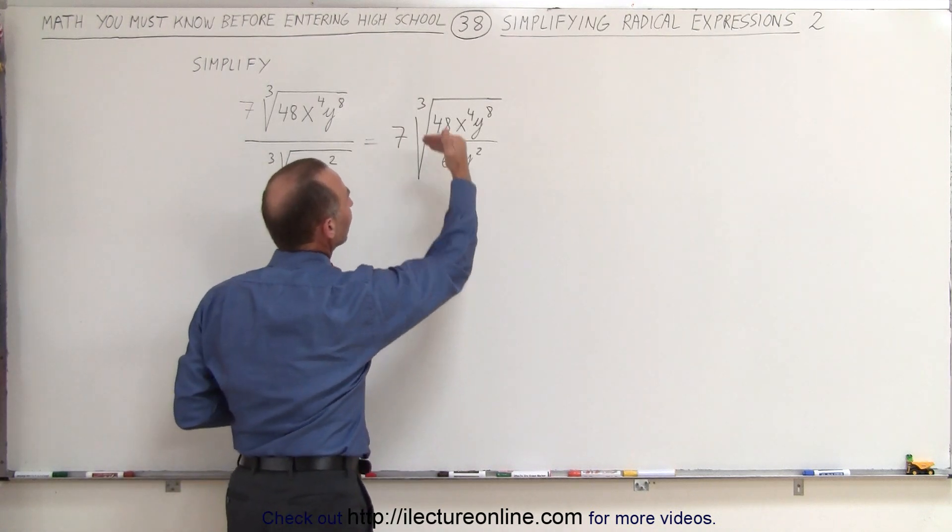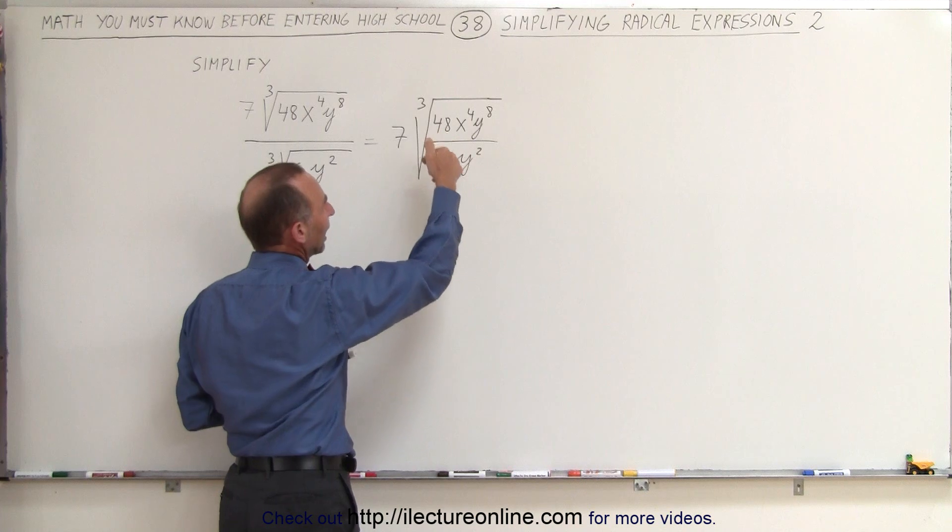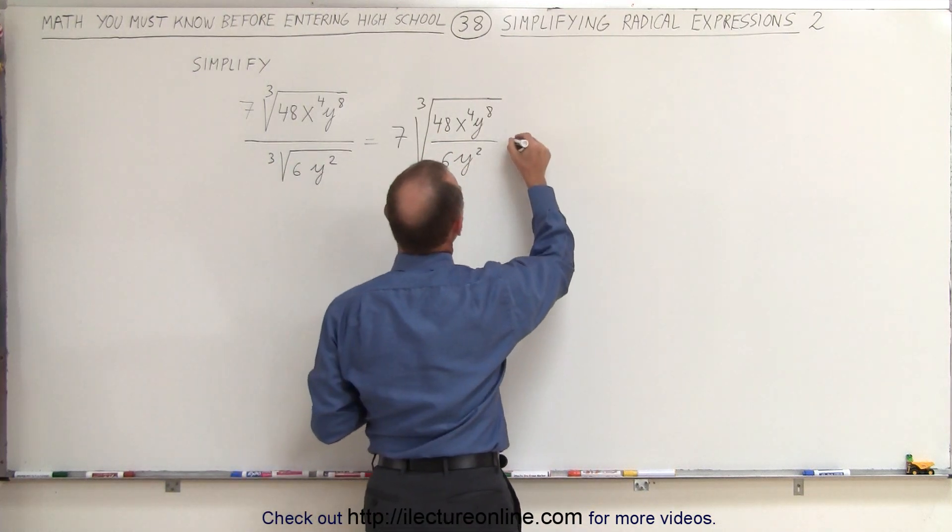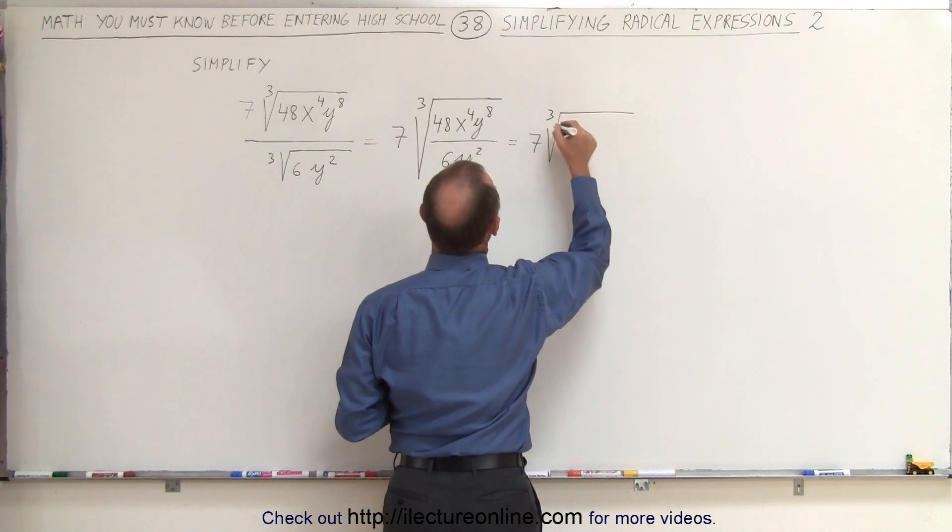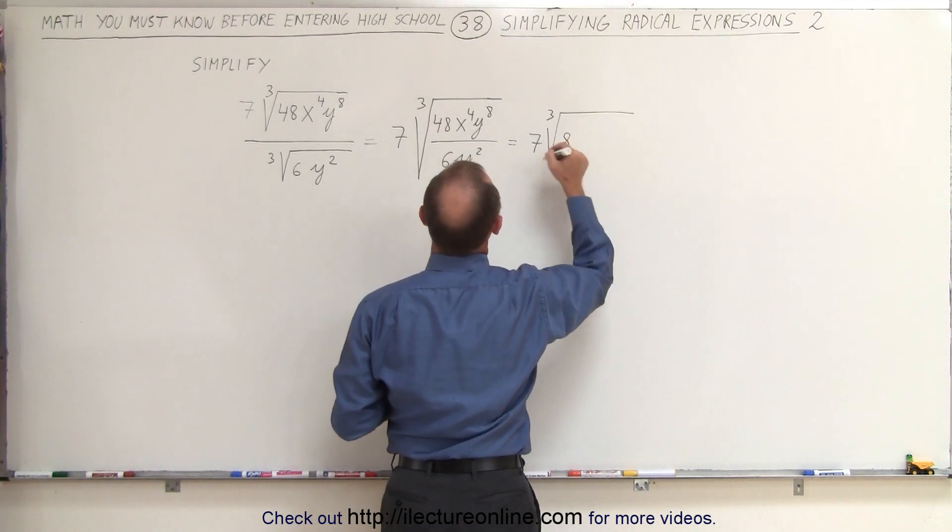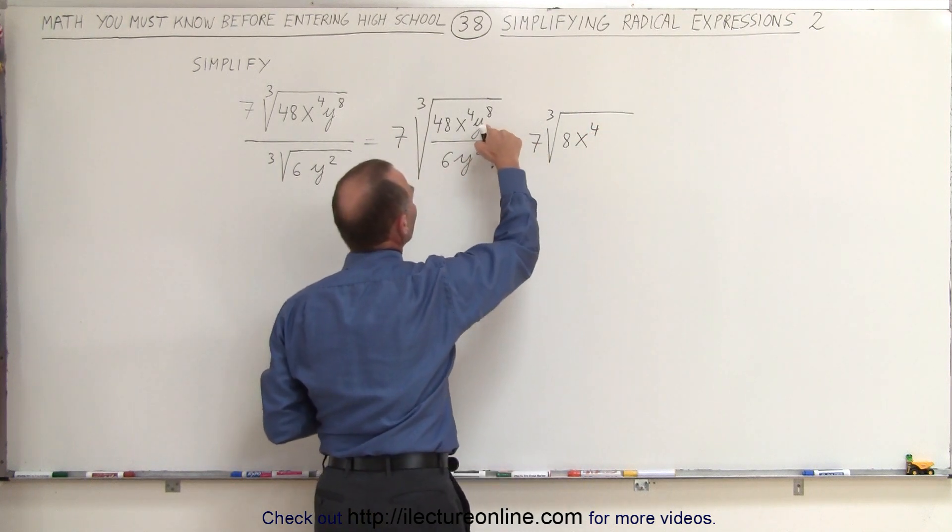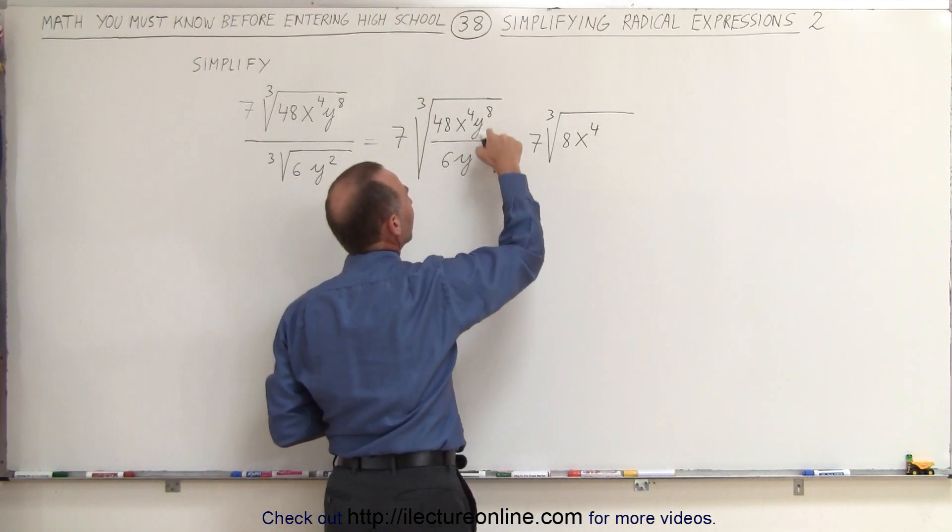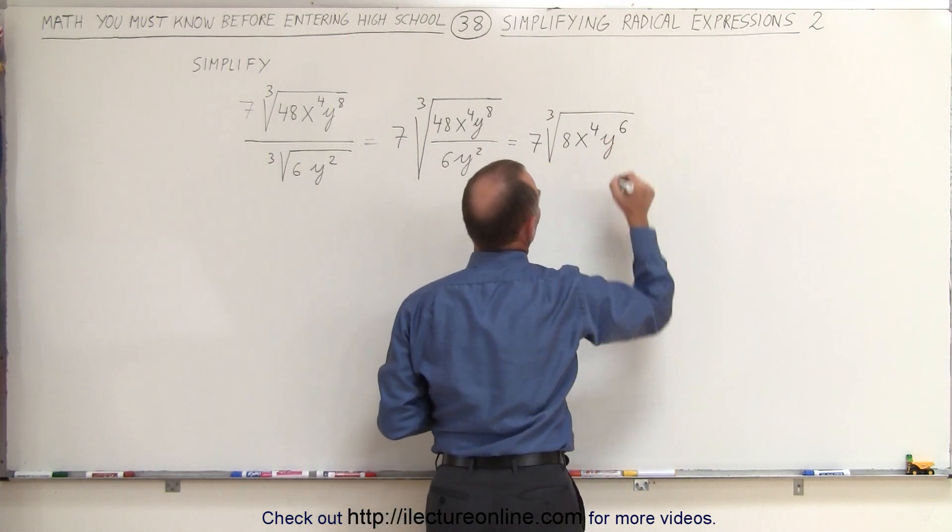Next we can divide the denominator into the numerator. We see that 6 goes into 48 8 times, because 8 times 6 is 48, so this can be written as 7 times the cube root of 8, x to the 4th, and we have y to the 8th divided by y to the 2nd, so we subtract exponents. 8 minus 2 is 6, so this becomes y to the 6th.